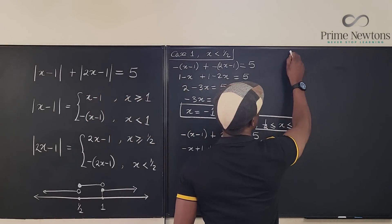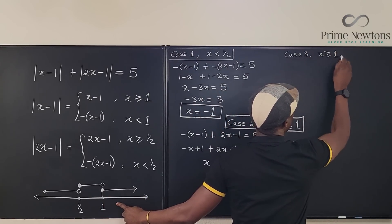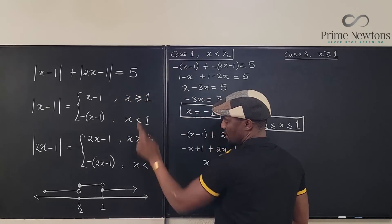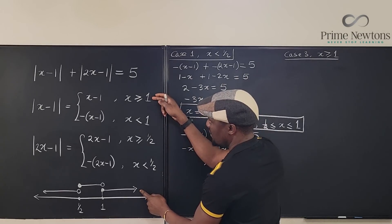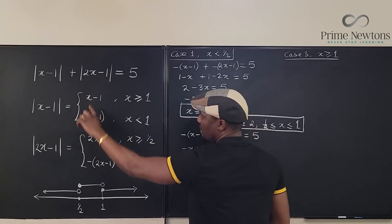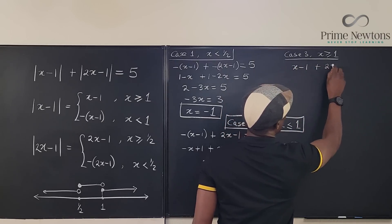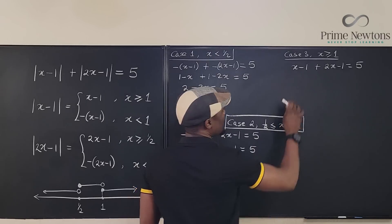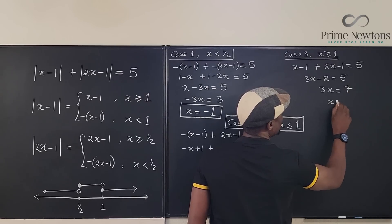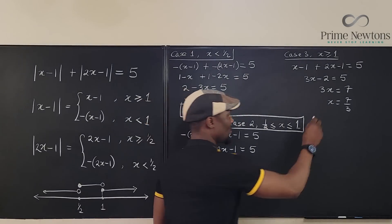Case 3: x ≥ 1. Both absolute values use their positive pieces: |x − 1| = x − 1 and |2x − 1| = 2x − 1. The equation becomes (x − 1) + (2x − 1) = 5, giving 3x − 2 = 5, so 3x = 7, meaning x = 7/3. Since 7/3 > 1, this is a valid answer.